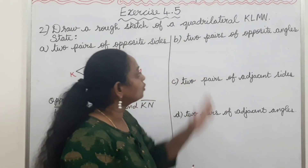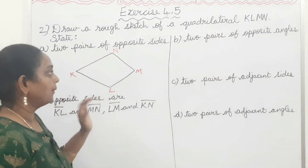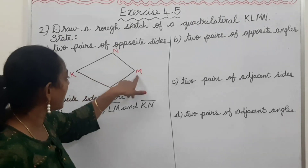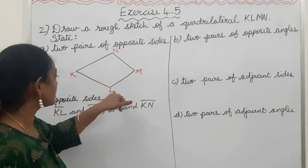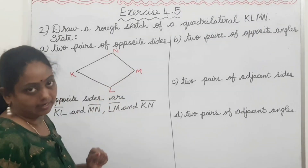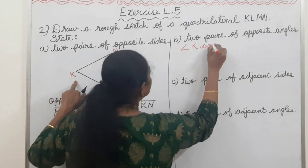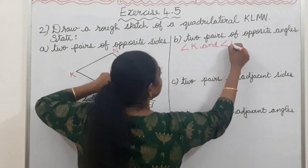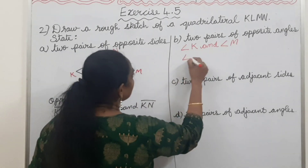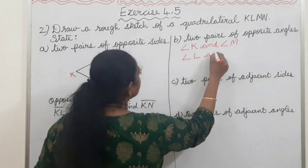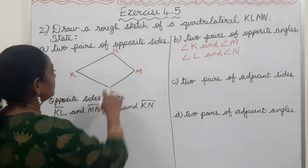Part B: Two pairs of opposite angles. Opposite angles hamen likhna hai. Opposite angles are: Angle K and Angle M — they are opposite angles. Doosra pair: Angle L and Angle N. So the two pairs of opposite angles are Angle K & Angle M, and Angle L & Angle N.